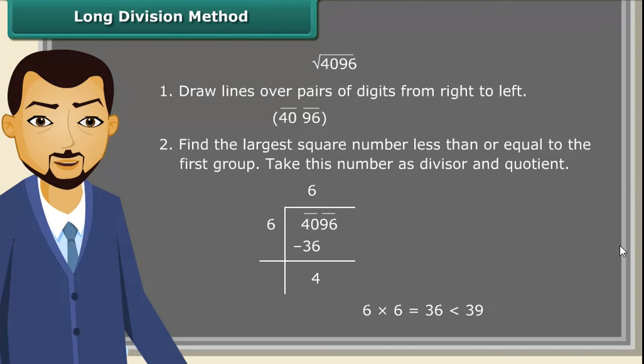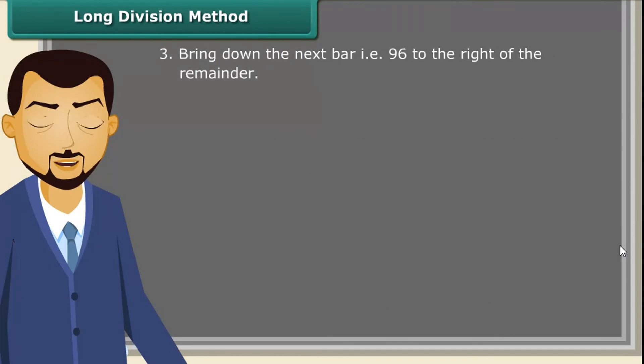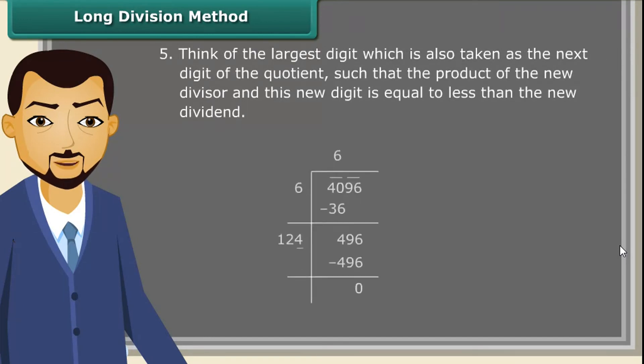Now, subtract 36 from 40. After that, bring down the next bar. That is 96 to the right of the remainder. Now, double the divisor. Next, think of the largest digit which is also taken as the next digit of the quotient such that...